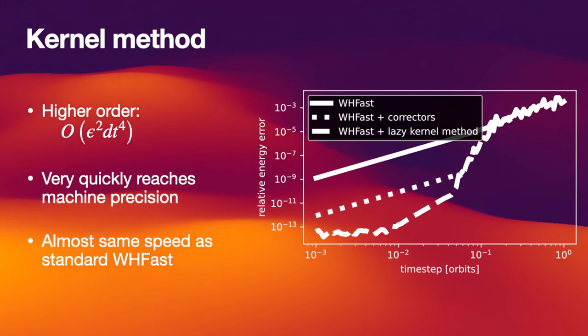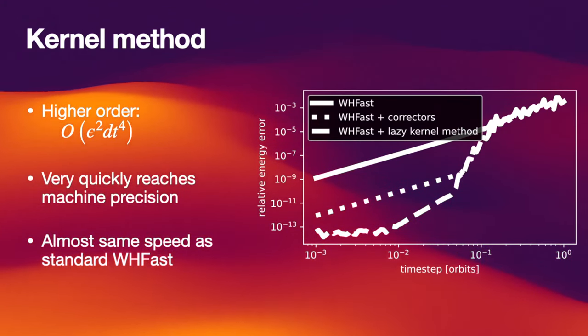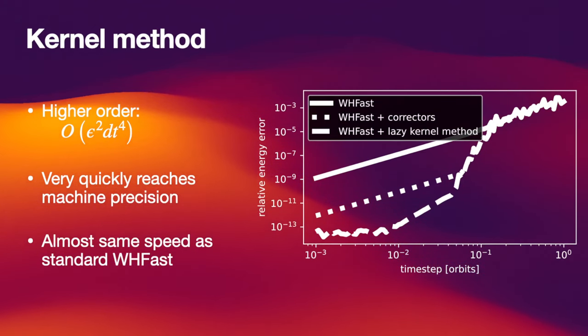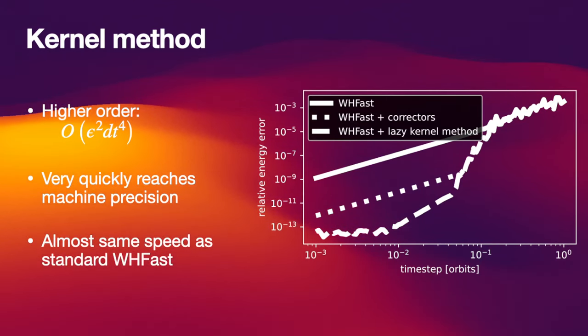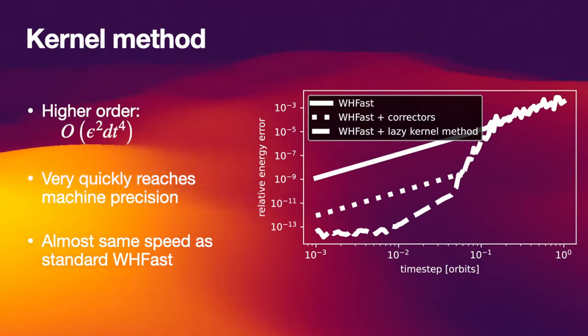Here's the same plot as before that shows you the accuracy of the simulation. And here I'm plotting an additional line, the bottom one, where the lazy corrector method is used. You can see that it's even more accurate, by at most another factor of 1000 compared to the other methods. You can also see that it's higher order. Whereas Wisdom-Holman and the Wisdom-Holman method with the symplectic correctors is a second order method for reasonable time steps, this method is now fourth order in the time step.